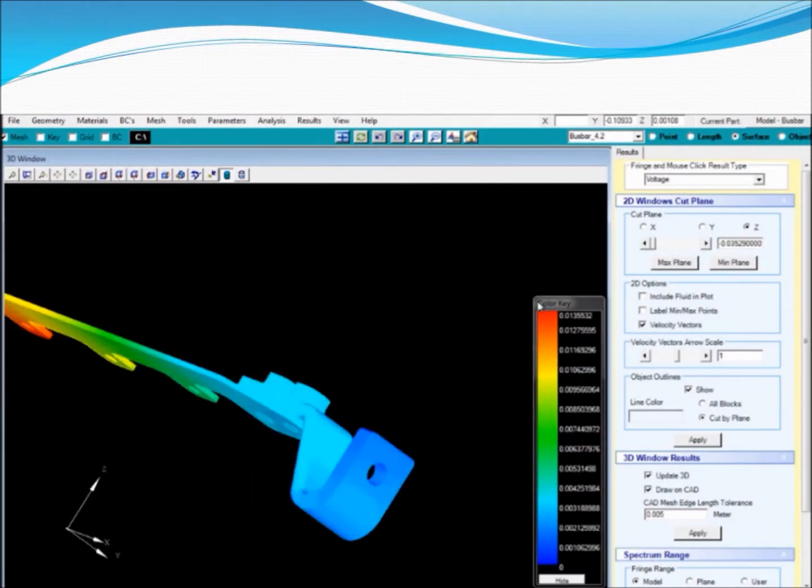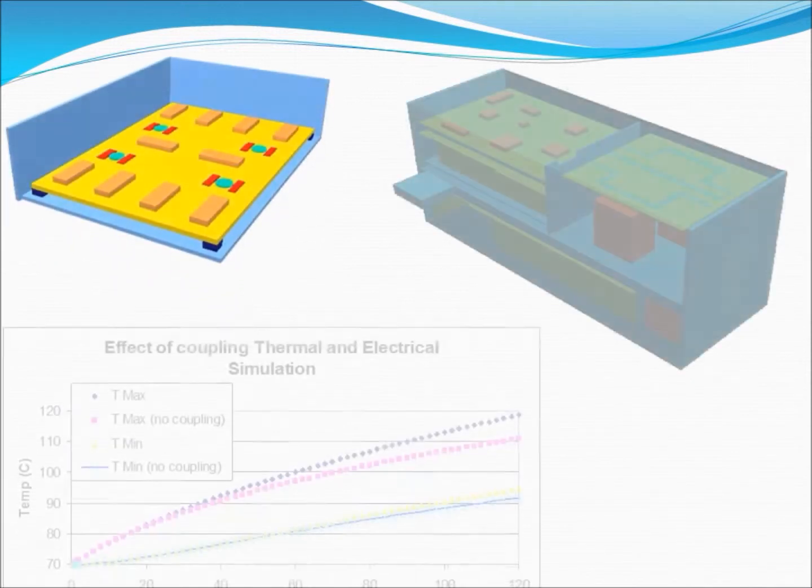Electroflow comes with a fully automated built-in mesher, and radiation can be calculated with one click.